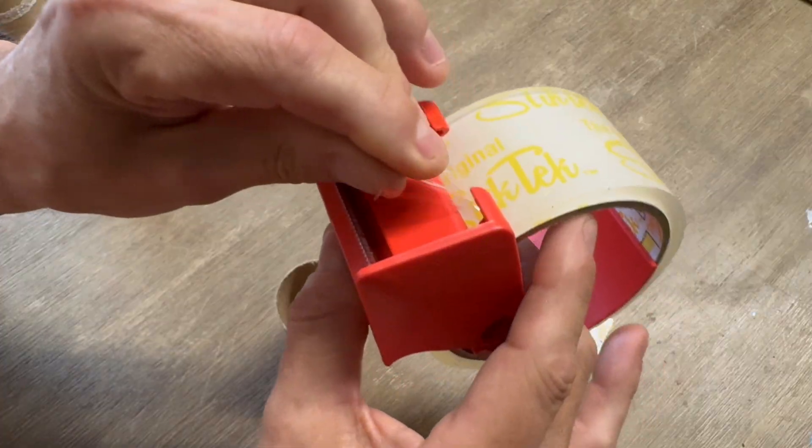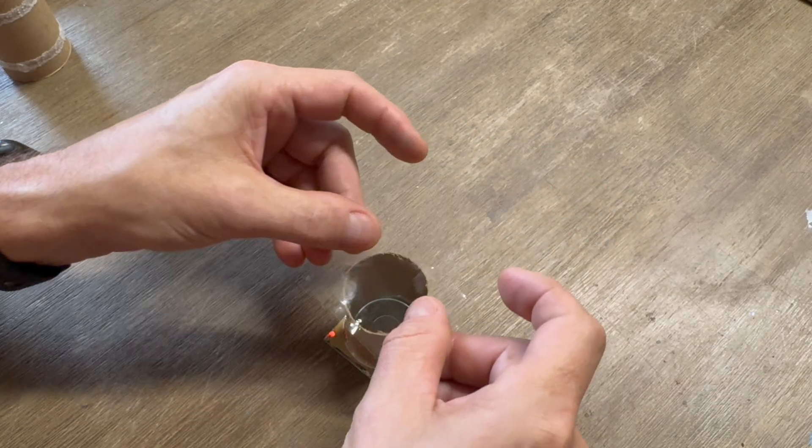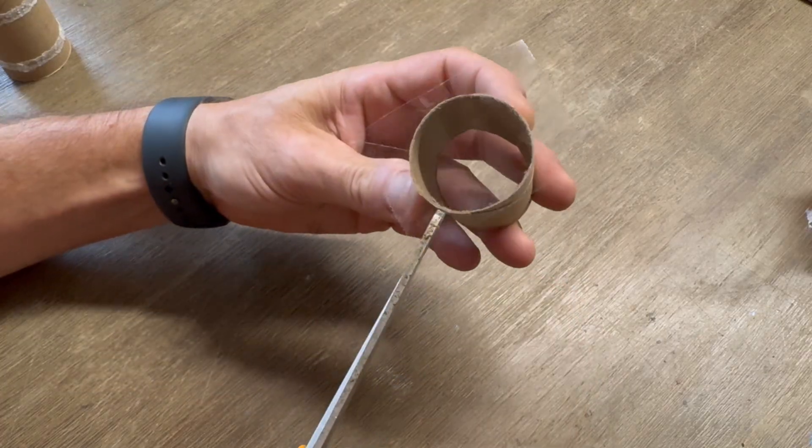This will be our peephole. I'm capping off the end that faces the colored pieces. This blocks any particles from falling into your mirrored triangle.